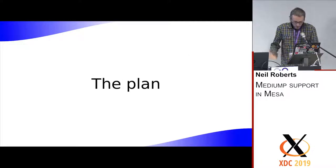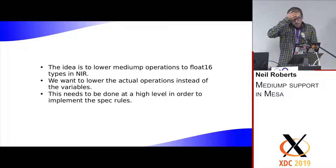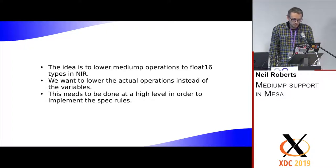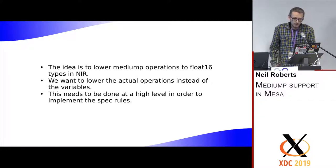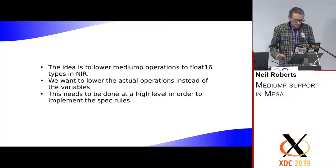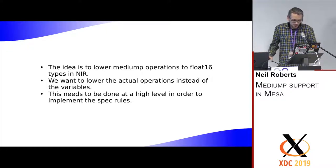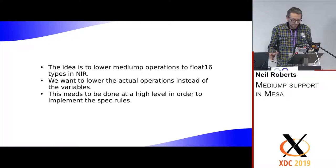The plan is to take advantage of these mediump qualifiers in MESA. What we want to do is lower mediump operations to float16 types. We want to lower the actual operations instead of the variables — we don't want to change the type of any variables to float16, just have the actual operations on those variables done in float16. We need to do this at as high a level as possible, because to implement the spec rules correctly you need to know exactly what the shader looked like in the code. By the time it's translated down to NIR, you've probably lost too much information to determine which operations were inner vs outer.